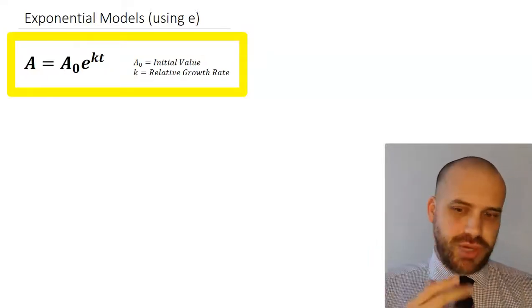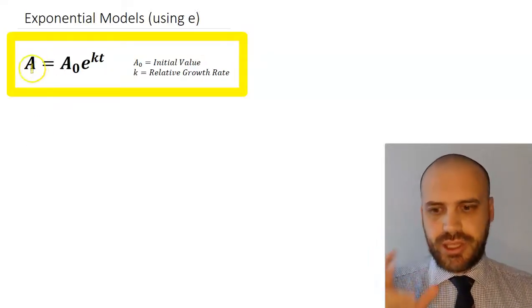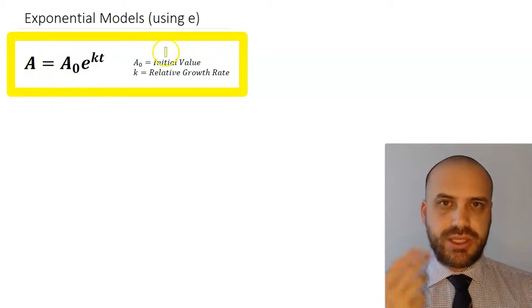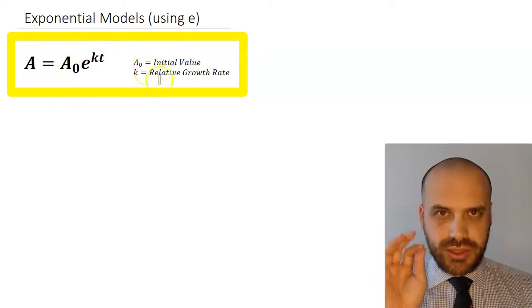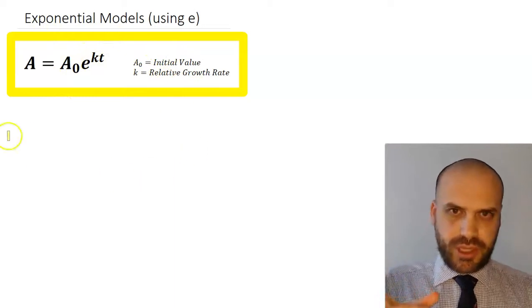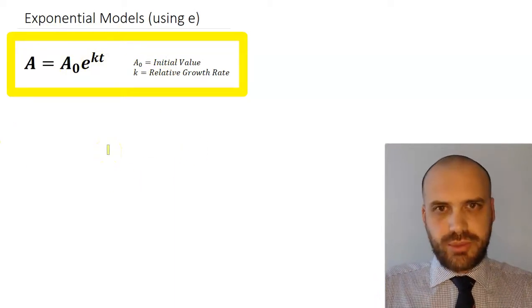If something is growing at an exponential rate, we can use this handy formula here, where A₀ is the initial value and k is the relative growth rate. Now when you've got a formula like that, when you graph it, it looks a bit more like this.